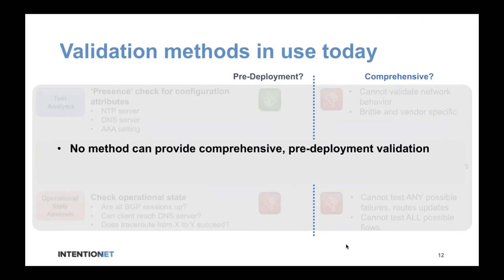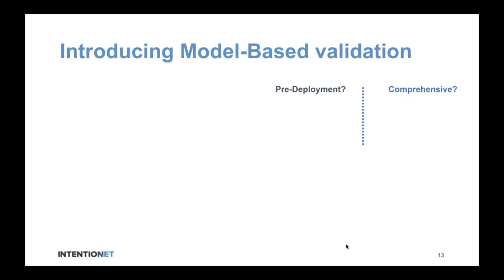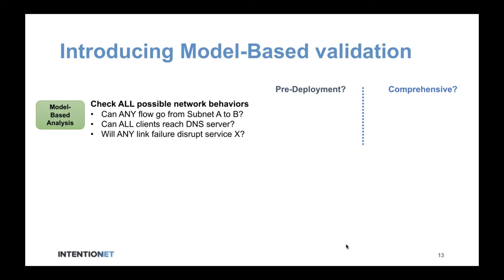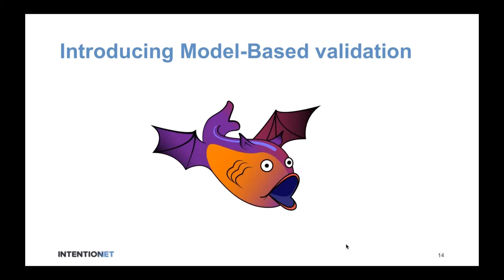None of the techniques we've seen meet the requirements of being both pre-deployment and comprehensive, so we need a new approach: model-based validation. Model-based analysis allows you to check all possible network behaviors — whether any flow can cross isolation boundaries, whether all clients can reach the DNS server, whether any link failure will cause a service disruption. You can do all of this pre-deployment based on just the configurations of all network devices, and it's comprehensive because you can test all possible failures, route announcements, and flows. Batfish is an example of a model-based validation tool.